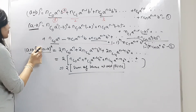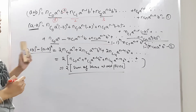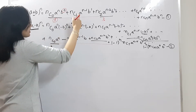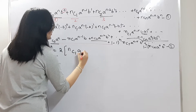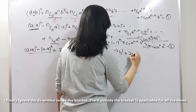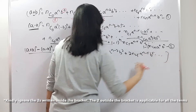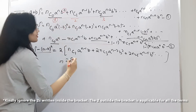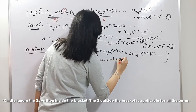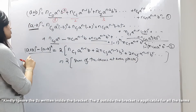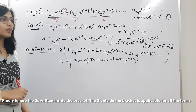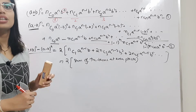In the same way, if we subtract: (a+b)^n - (a-b)^n, the first terms cancel and we get 2 times the sum of terms with odd powers of b: 2[nC1 · a^(n-1) · b + nC3 · a^(n-3) · b^3 + nC5 · a^(n-5) · b^5 + ...]. These are the terms at even places. This is what happens when you add and subtract two binomial expansions with the same variables.